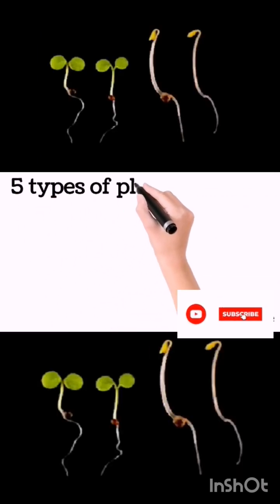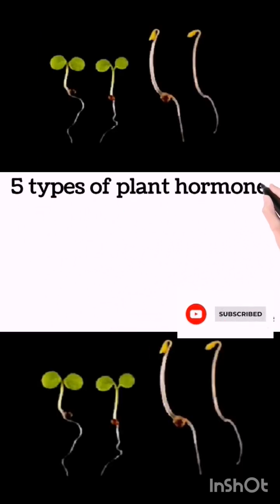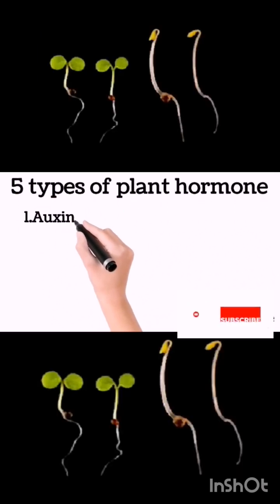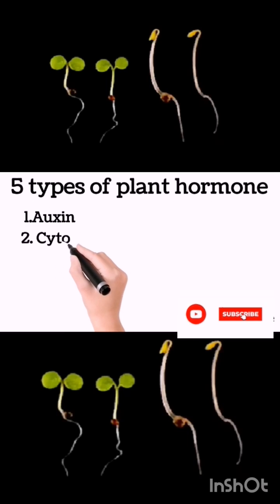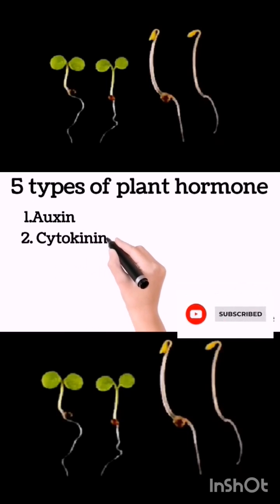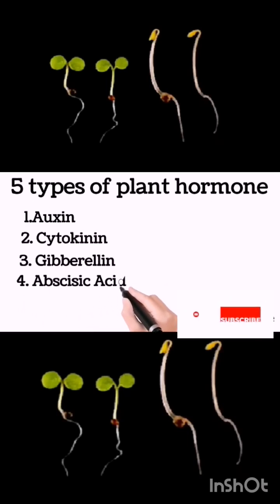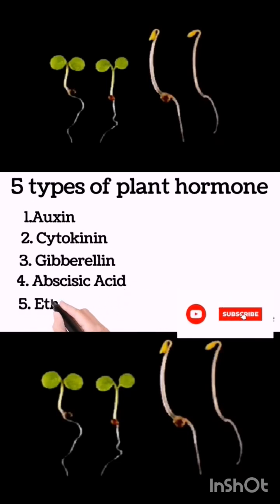There are five types of plant hormones: 1. Auxins, 2. Cytokinin, 3. Gibberellin, 4. Abscisic acid, 5. Ethylene.